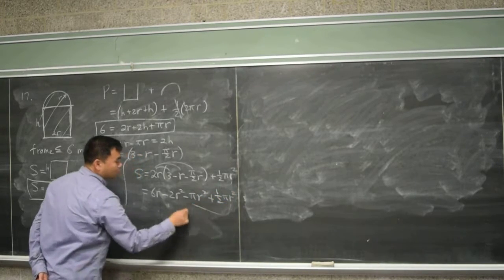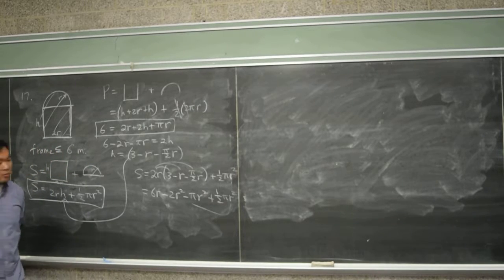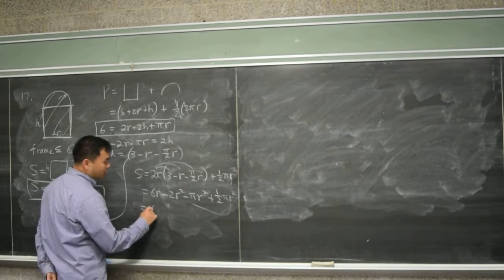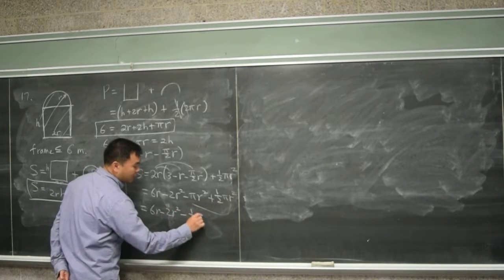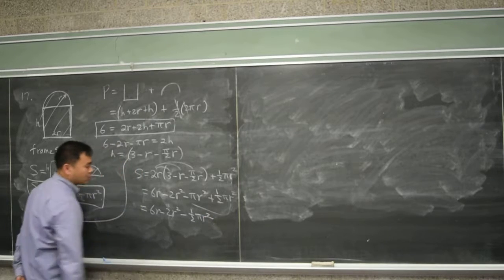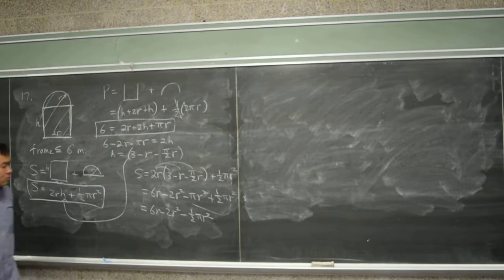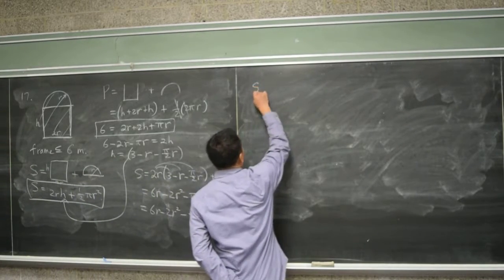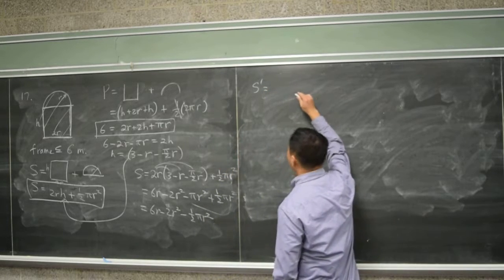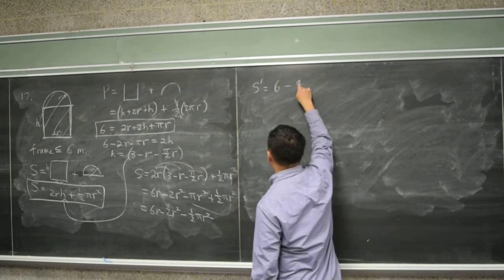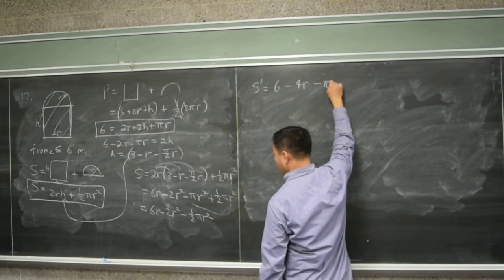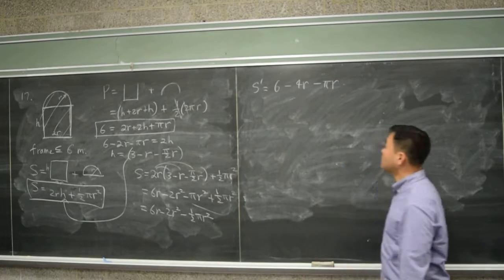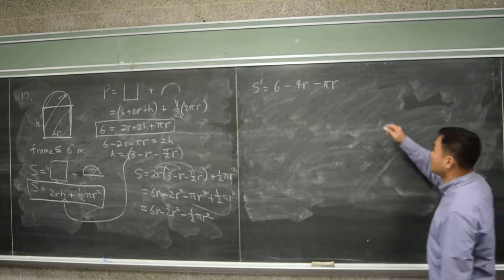And I see these two being like terms, right? So those are like terms, so we put them together. So it's 6R minus 2R squared minus one-half pi R squared. Now that's your target function. Now we differentiate it. So S prime is six minus 4R minus pi R. Okay? And you set this equal to zero.